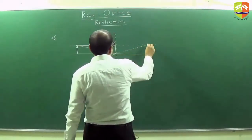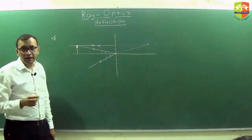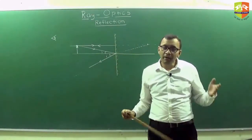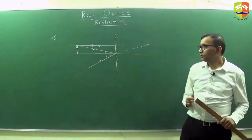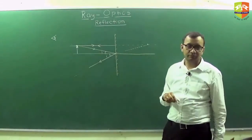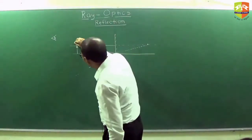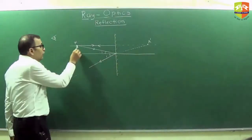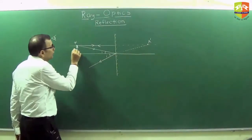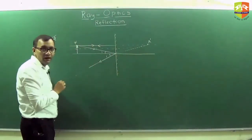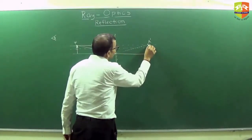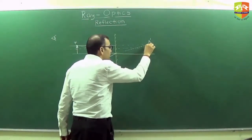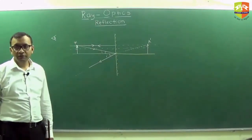The rays appear to meet behind the mirror — in order to form an image, the light rays do not need to actually meet; they just appear to meet at a point. The observer feels as if light rays are coming from this point, so this is the image. Tracking all points, you get the complete image on the other side. Using congruent triangles, this distance from mirror to image equals the distance from mirror to object.